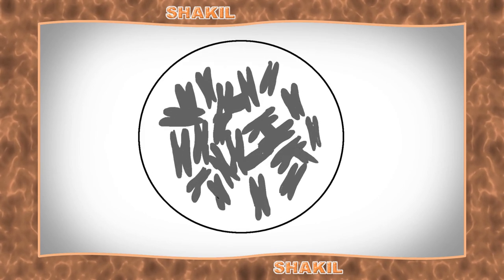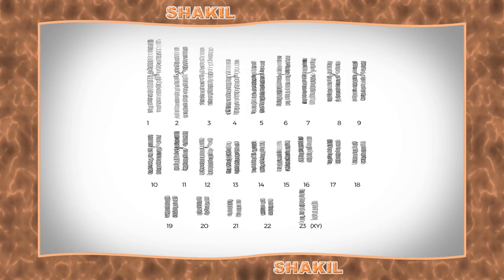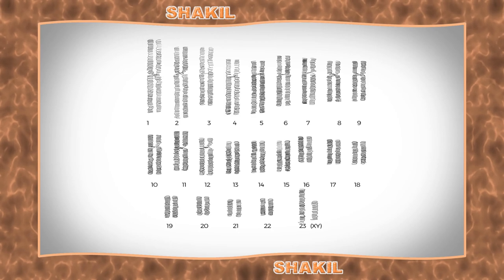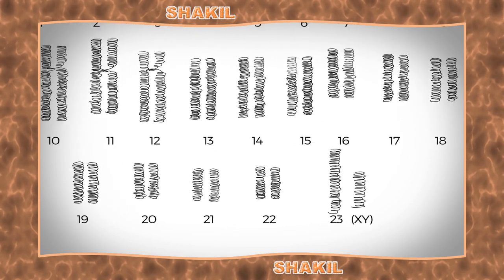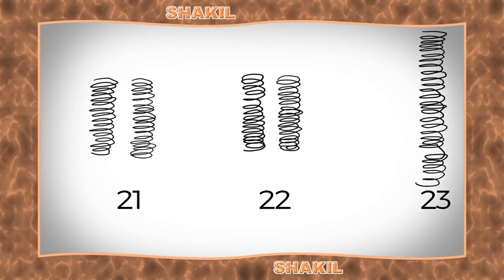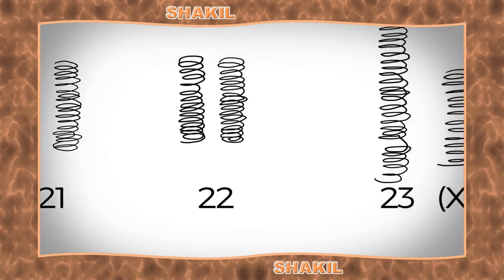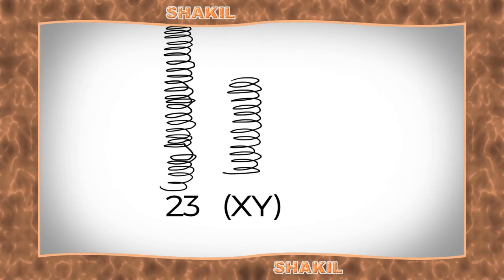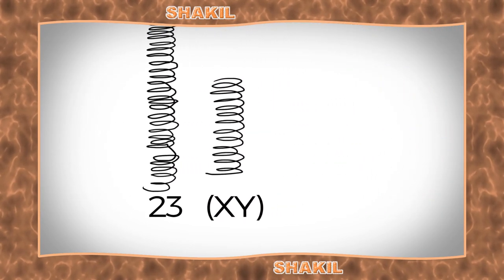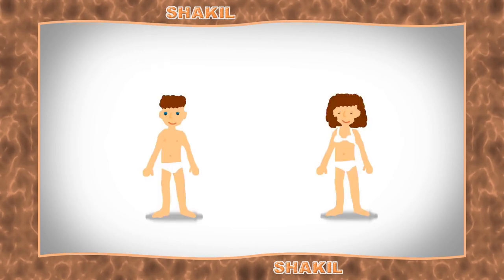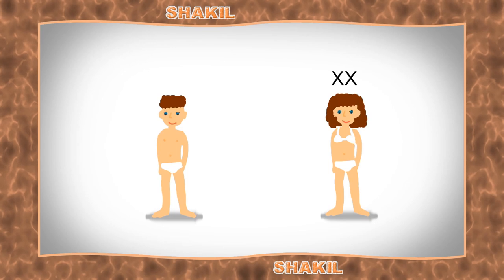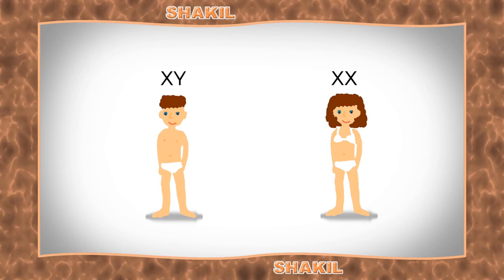In humans, each cell normally contains 23 pairs of chromosomes, for a total of 46. 22 of these pairs, called autosomes, look the same in both males and females. The 23rd pair, the sex chromosomes, differ between males and females. Females have two copies of the X chromosome, while males have one X and one Y chromosome.